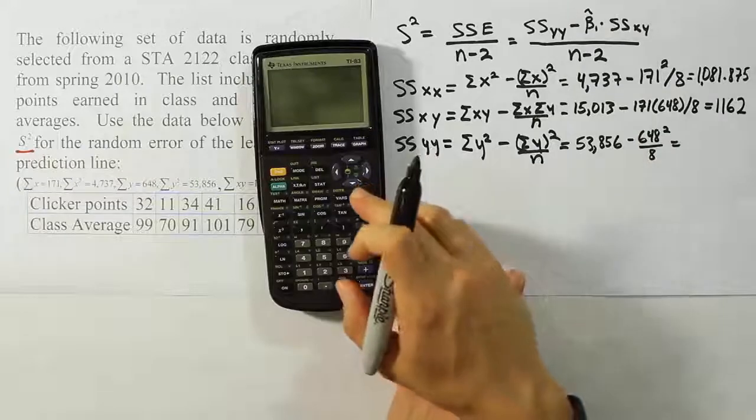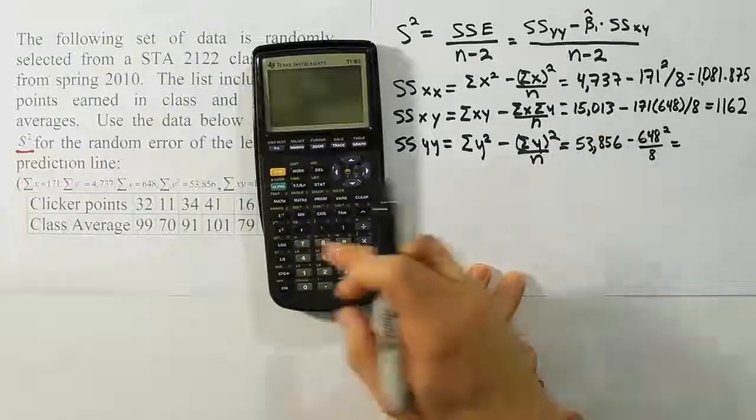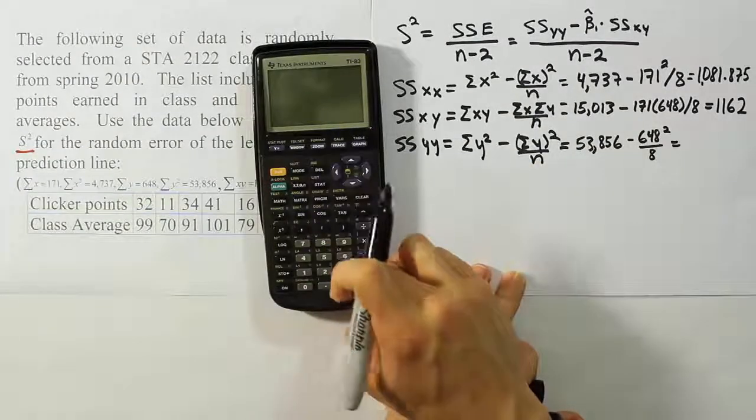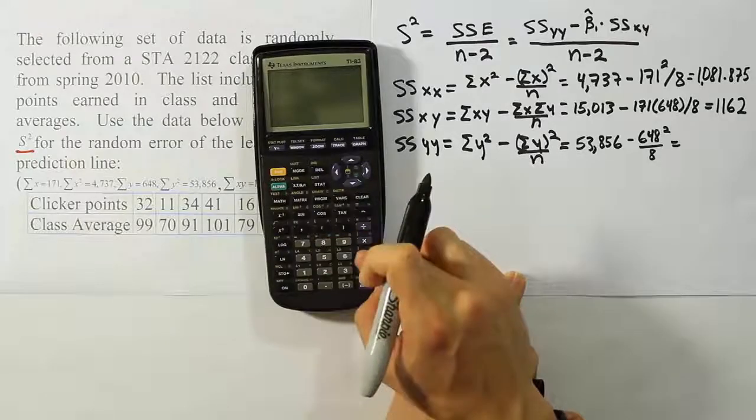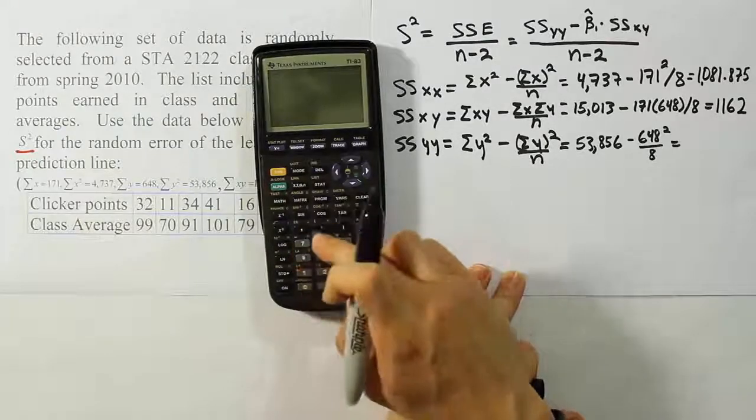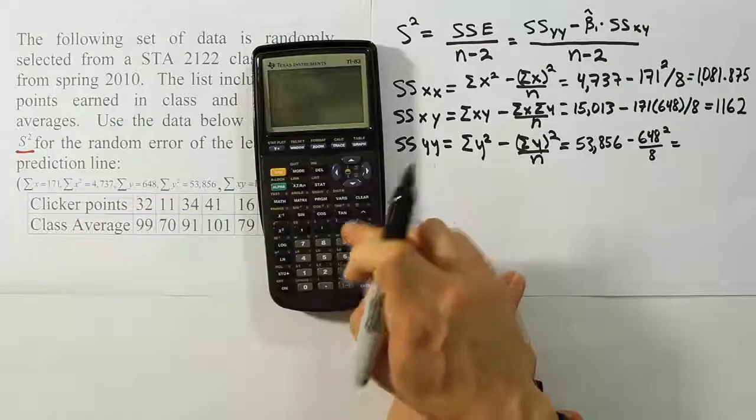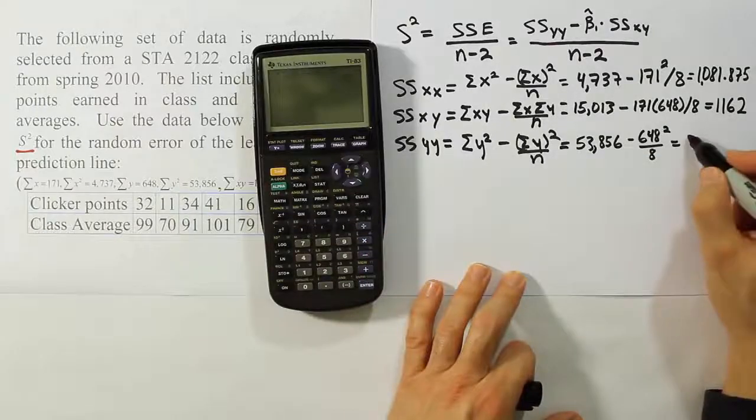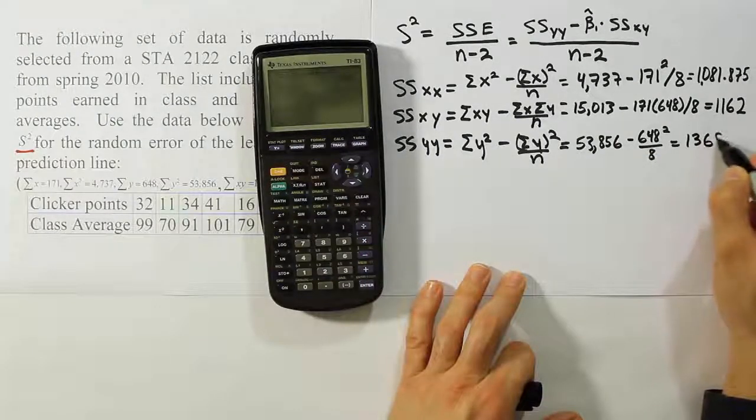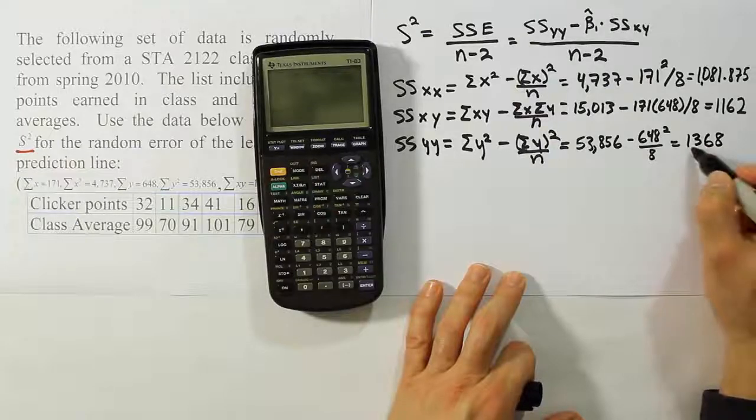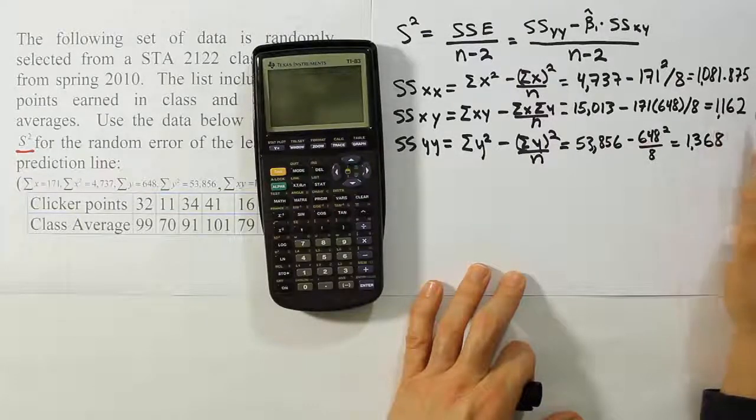Let's do the next one then. The next one is 53,856, so 53,856 minus 648 squared divided by 8, and we get the answer 1368.